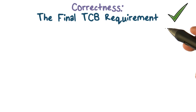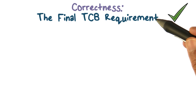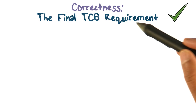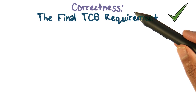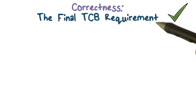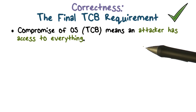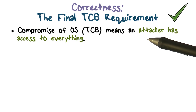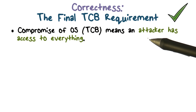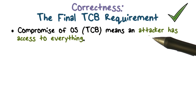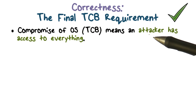So why virtualization and hypervisor may give you better security — we're going to get back to the third requirement that we have for a trusted computing base, which was getting it right, or having the correctness property. Correctness is really important because compromise of the trusted computing base means the attacker has access to everything. Remember our 'keys to the kingdom' statement — you compromise the operating system, you gain access to all the physical resources: every memory page, every block on the disk, whatever else is coming in and out of this machine. So compromise of a TCB is really bad.